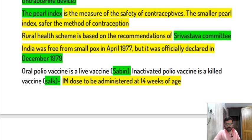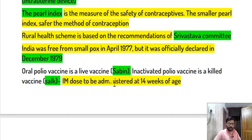Oral polio vaccine is a live vaccine — it is the Sabin vaccine. Inactivated polio vaccine is a killed vaccine administered via IM injection. The oral polio vaccine is given orally, while the inactivated (IM) dose is administered starting at 14 weeks of age.